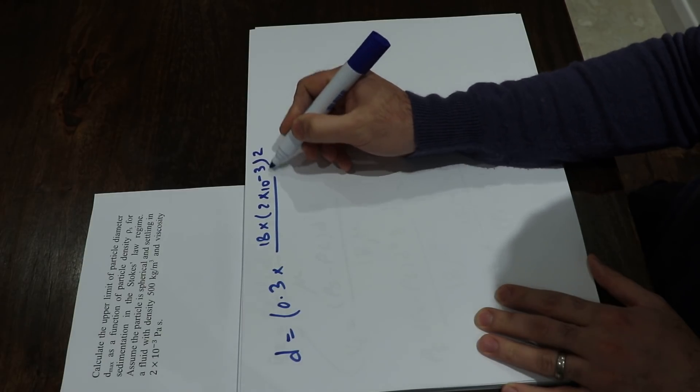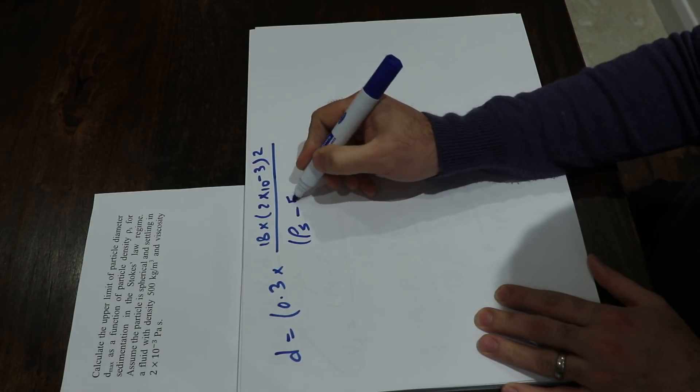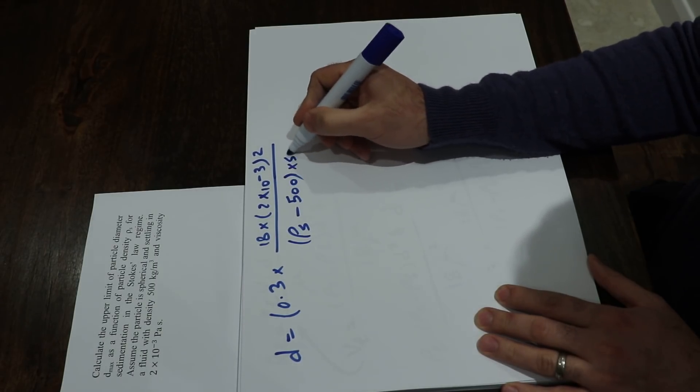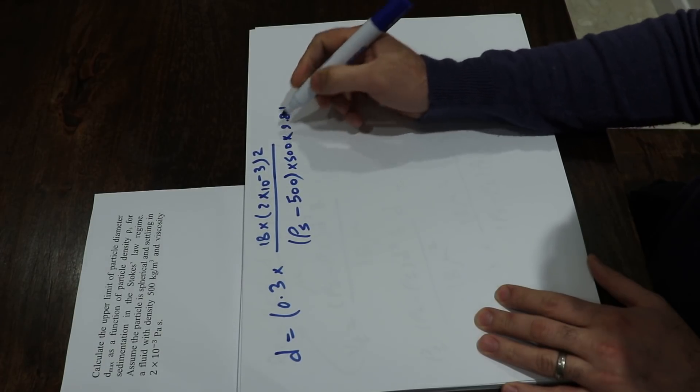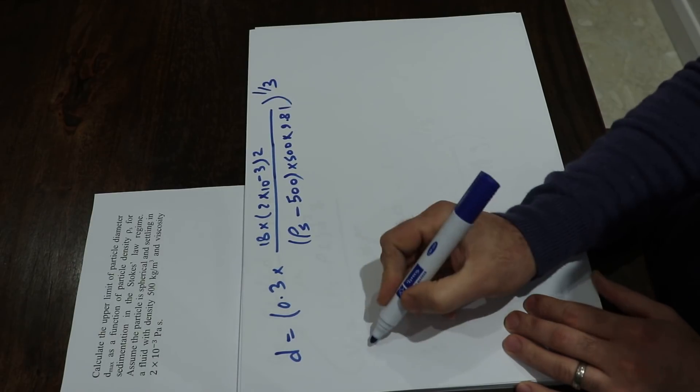Divided by (ρ_s minus 500), that is given in the question, times 500 times 9.81, with the power of 1 divided by 3.